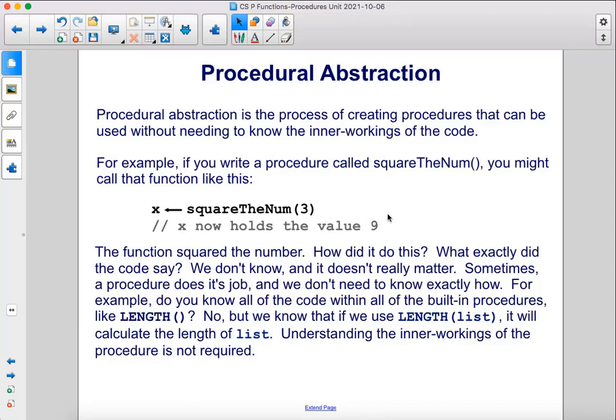The function squared the number. How did it do this? What exactly did the code say? We don't know and it doesn't really matter. Sometimes a procedure does its job and we don't need to know exactly how.